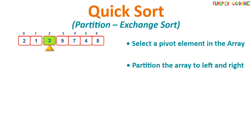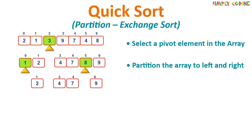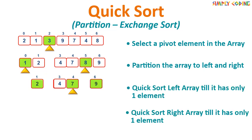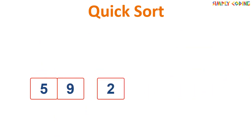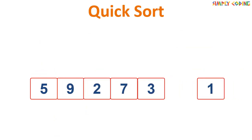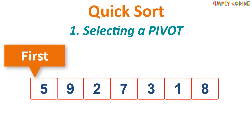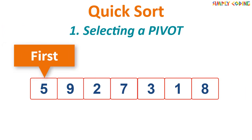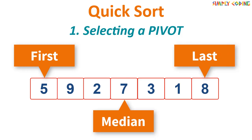It then partitions the left and right into two sub-arrays. The sub-arrays are then sorted recursively using the same steps of selecting a pivot and partitioning. Now, if you have a list of unsorted numbers, the first thing is selecting a pivot. You can select the first element, the last element, the median, or a random number as the pivot.